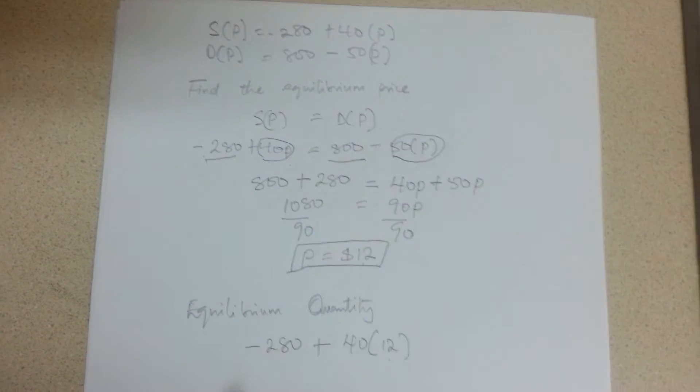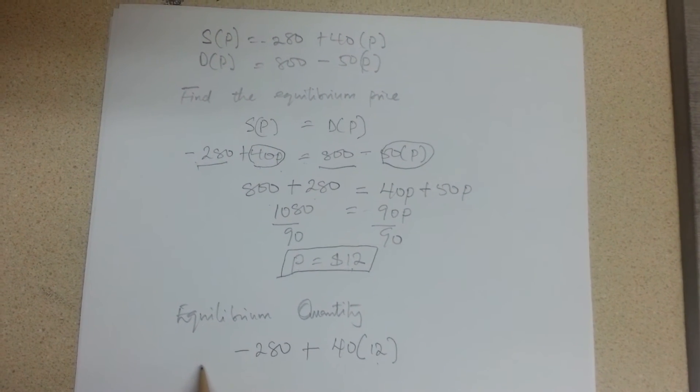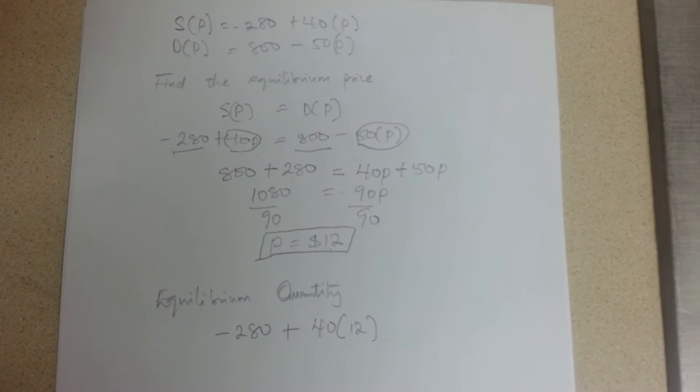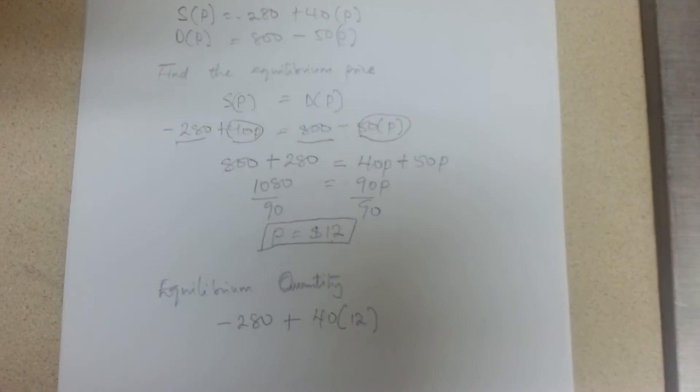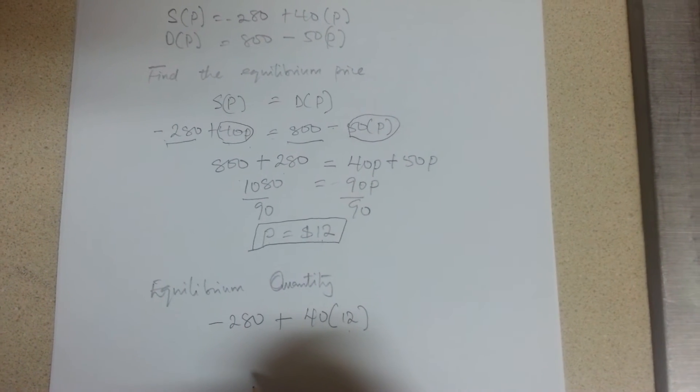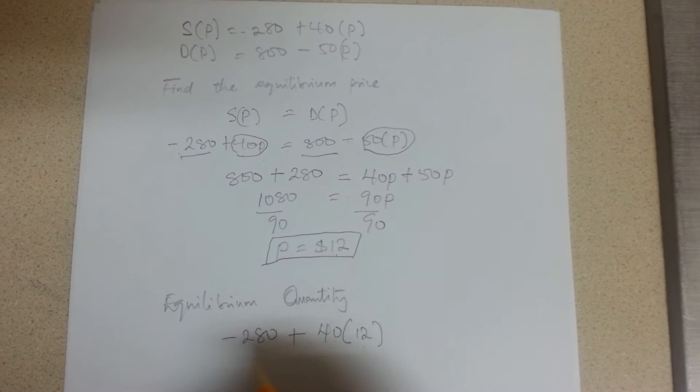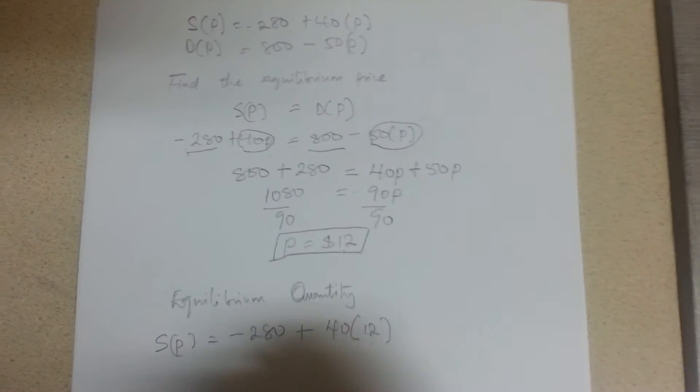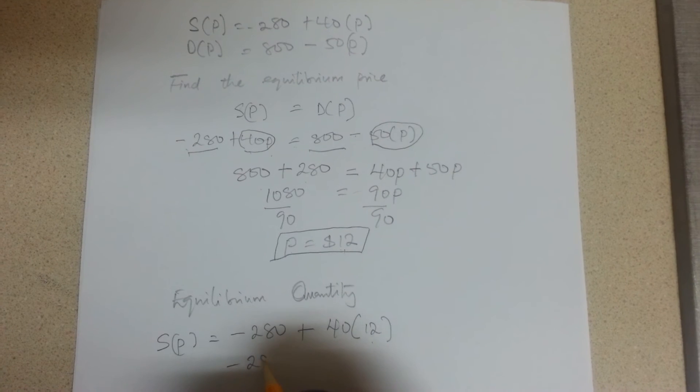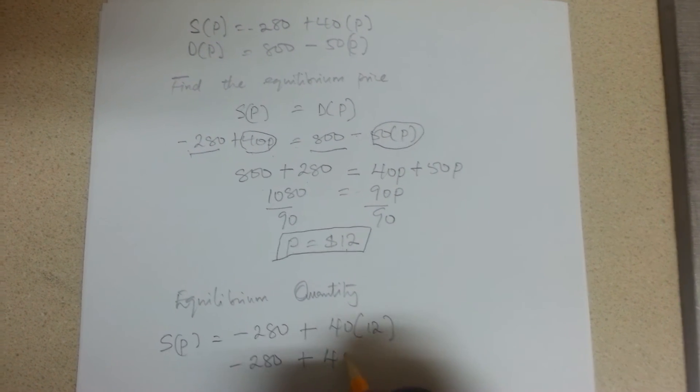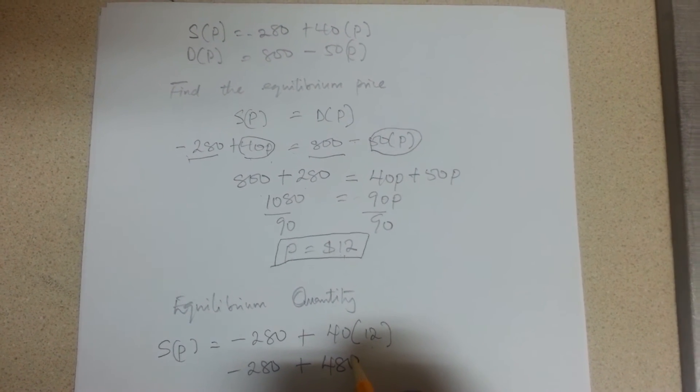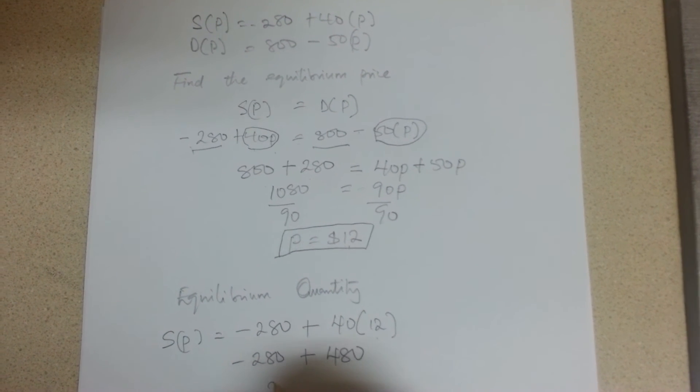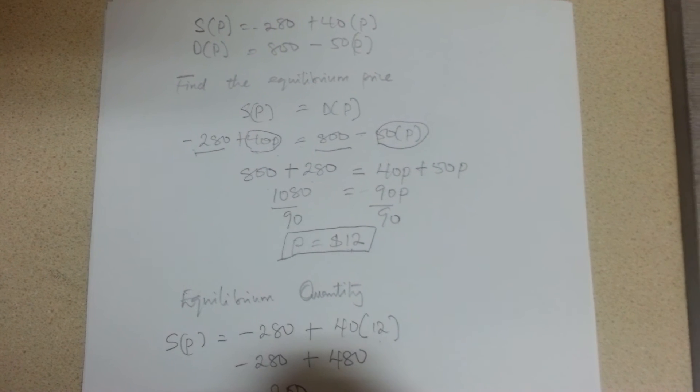P takes the value of 12. The same thing if you take the second equation, the demand equation, you're still going to arrive at the same quantity figure. So taking the supply equation, negative 280 plus 480 gives you 200, so that's our quantity.